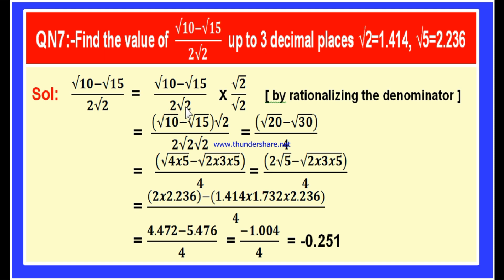Since root 2 is the rationalizing factor, let us multiply both numerator and denominator of the fraction with root 2 so that the value of the fraction does not change. In order to find the product of two fractions, we have to multiply the numerators divided by the product of the denominators.